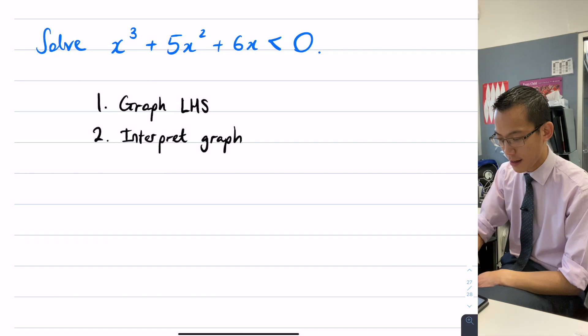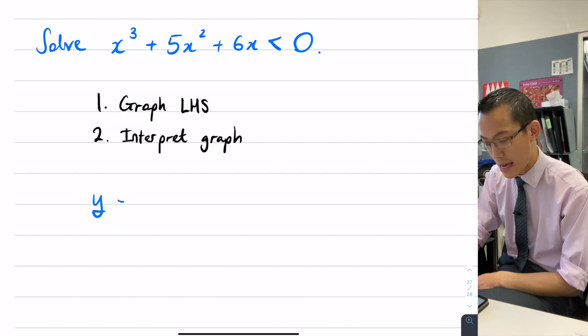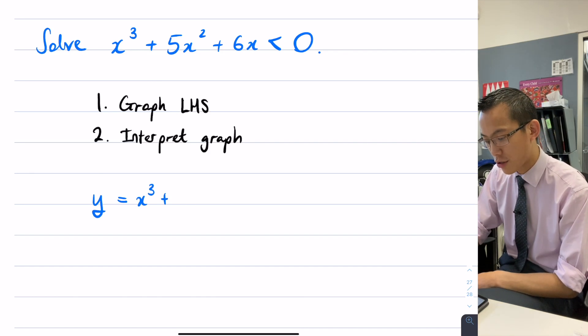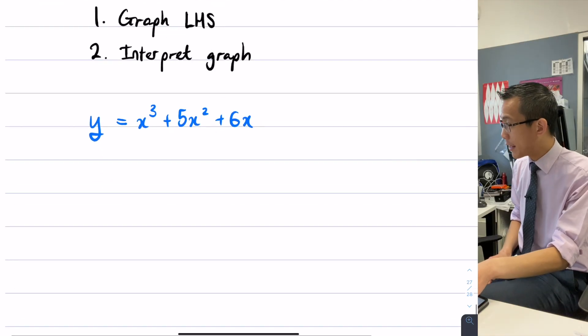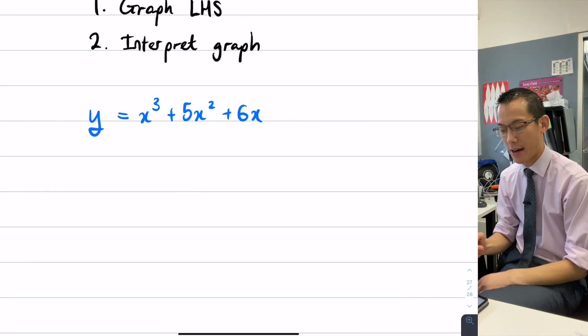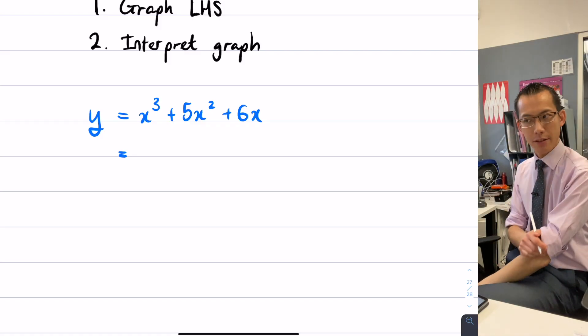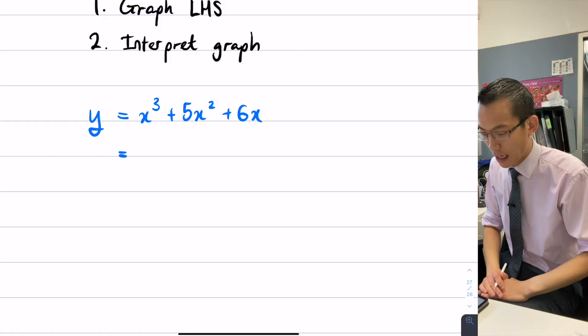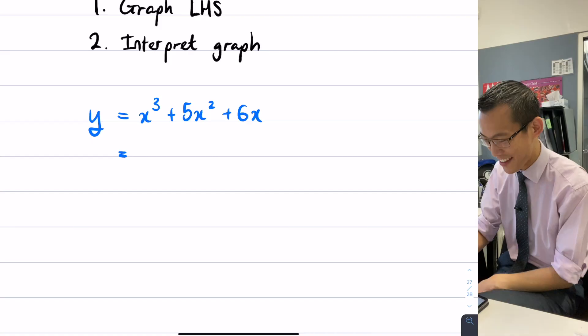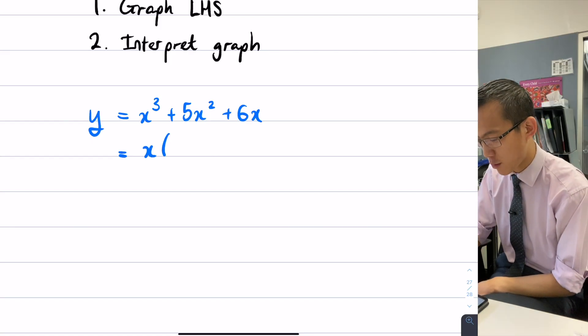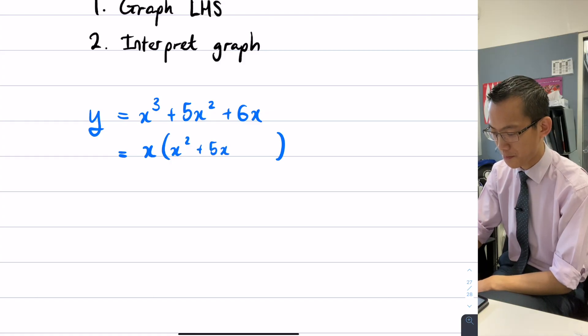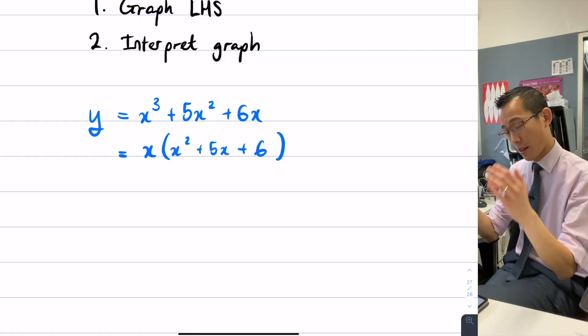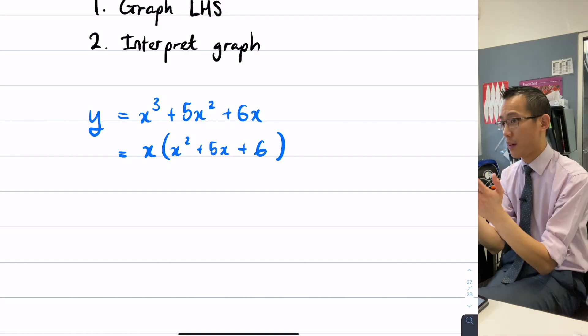That thing on the left-hand side, if I just took that and I said let y equal to that. Let's try our best to work out what this thing looks like. When you graph, it's always helpful, like in our previous questions, to factorize. So can you tell me, are there any common factors here for these three terms?